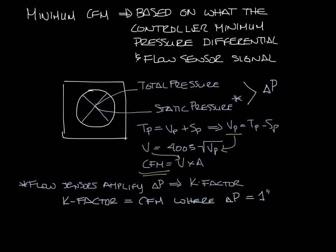Delta P is the difference between your two signals. For a 10 inch arrow cross, the K factor is 1436, basically saying that at 1436 CFM the pressure signal delta P across the flow sensor is one inch.